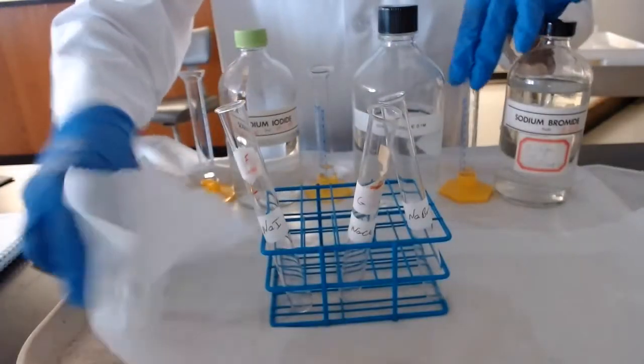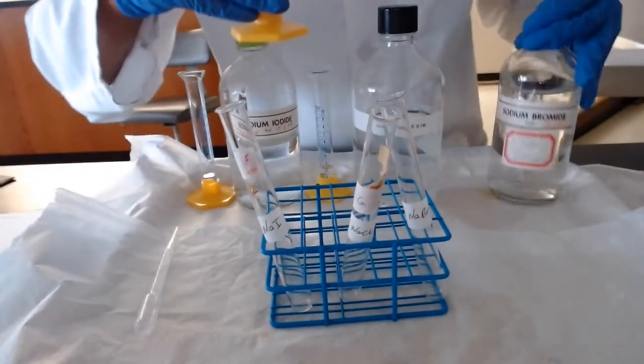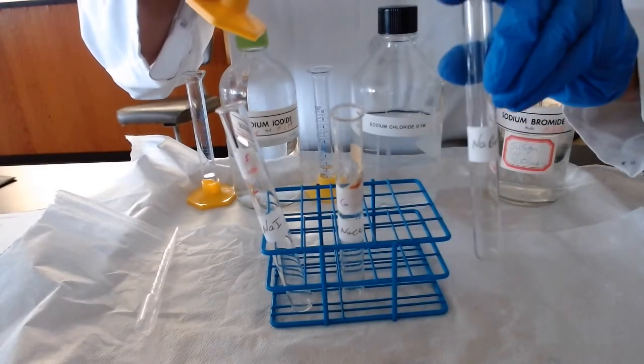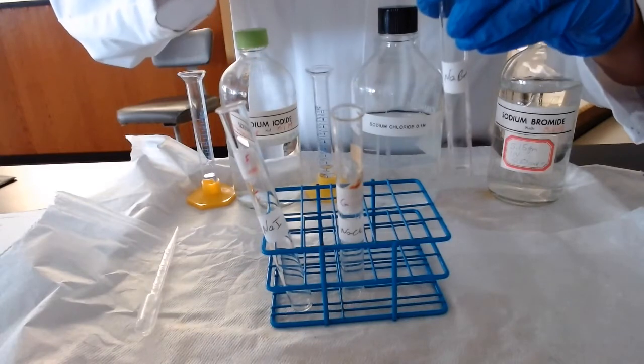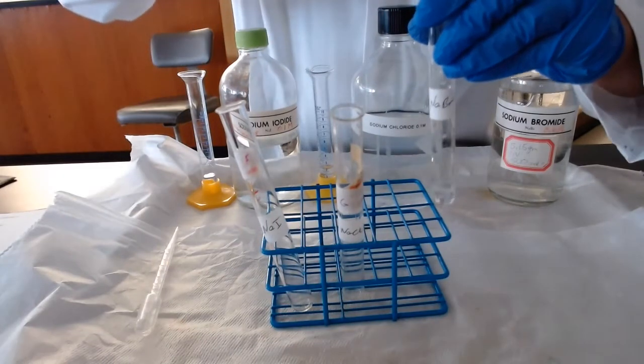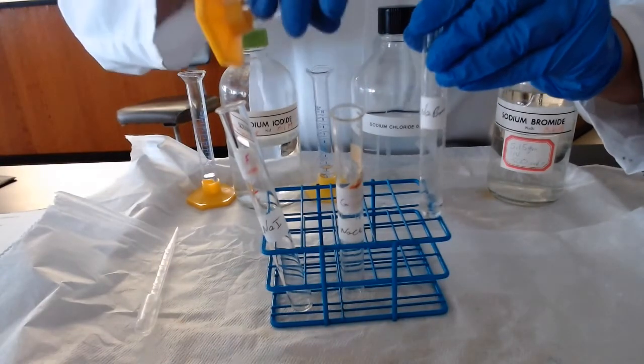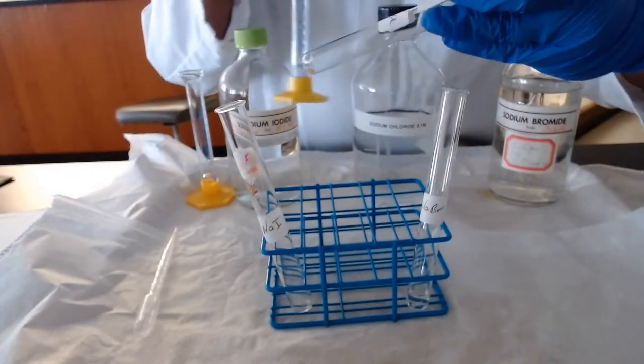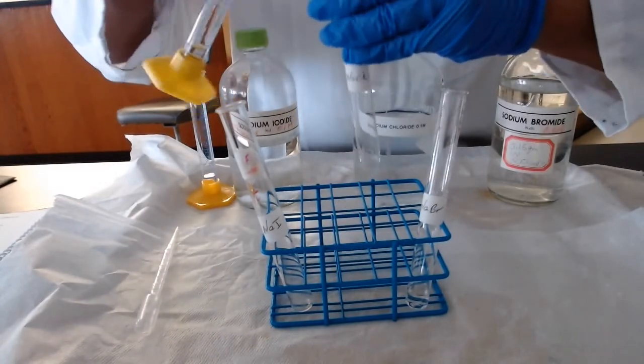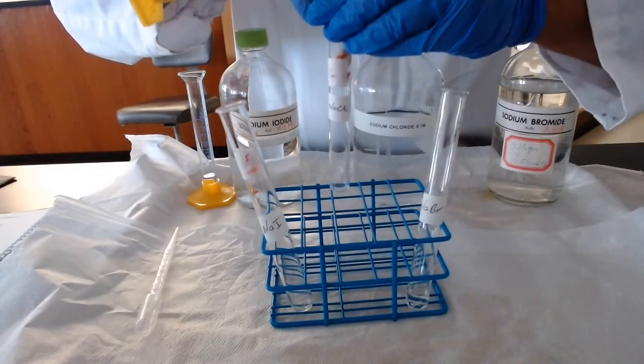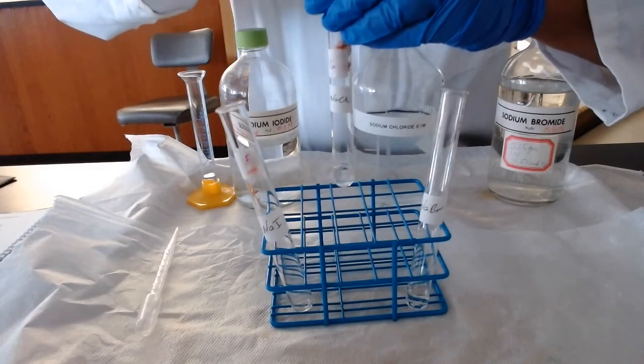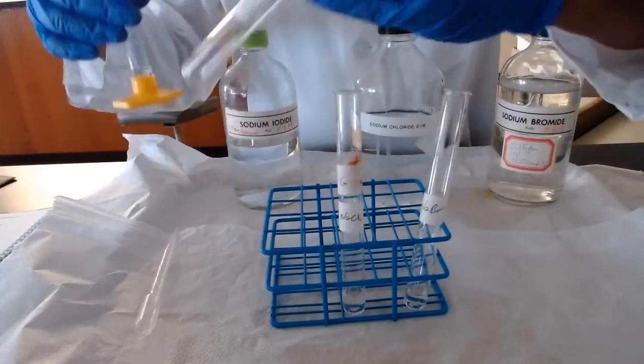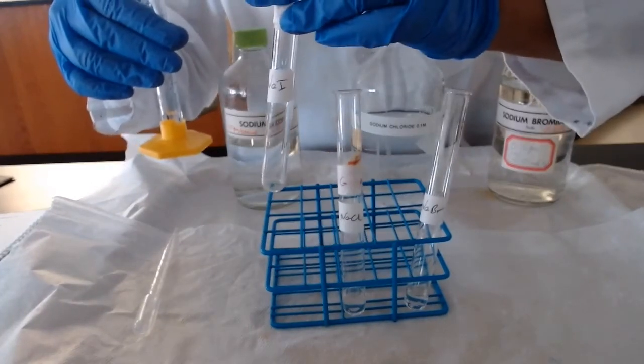I will place 2 milliliters of sodium bromide into my test tube that I have here labeled, 2 milliliters of sodium chloride, and 2 milliliters of sodium iodide.